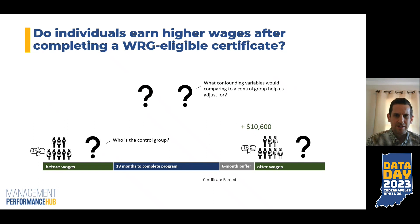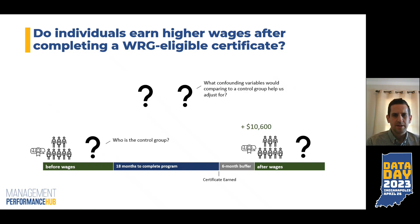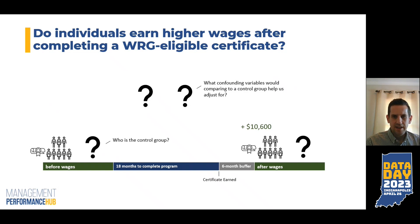In this case, we're asking a very similar question — still asking about growth. We're interested to see: do individuals earn higher wages after completing a Workforce Ready Grant eligible certificate? Does that certificate lead to a wage bump in an individual's career? We can see the date an individual earned a certificate, and we assume an 18-month period before that to take the necessary courses, and a six-month buffer afterwards to allow time for the individual to find a new job, switch industries, or get a promotion. For our sample, the median individual sees a wage increase of about $10,000 from the before to the after wage period.